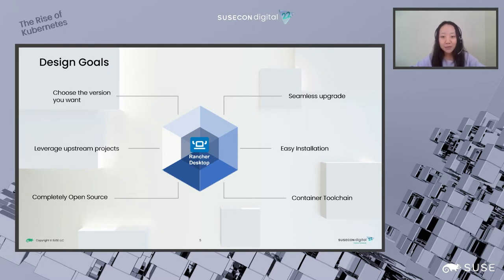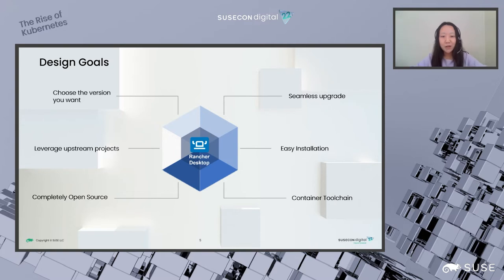Some of you might use Docker Desktop today. However, Docker is charging for that. It has never been fully open source, and Rancher Desktop is completely open source. It's free to download, it's free to use. And we know getting started with Kubernetes on a desktop can be quite complicated, especially if you want to match the version you run locally to the version you run in production. That's why SUSE created Rancher Desktop.